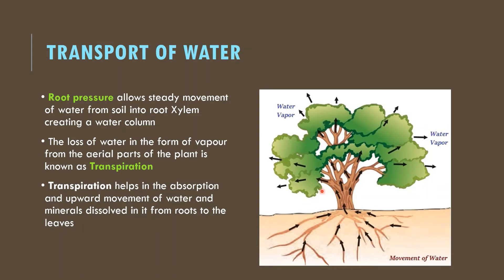Along with root pressure, there is another process called transpiration. Transpiration is the loss of water from the aerial parts of the plant. Stomata in the leaves open and close for gaseous exchange, and when they open, there is also a loss of water through the stomata opening. This creates a driving force for water to move upward to the aerial parts. Therefore, there are two forces that drive water upward: root pressure and transpiration. These forces also drive the transport of minerals from the soil upward.